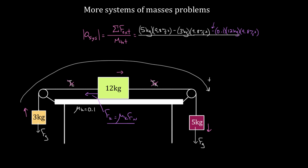Then I divide by the total mass: three plus 12 plus five equals 20 kilograms. Solving this gives an acceleration of the system of 0.392 meters per second squared. This is a very fast, essentially one-liner approach. There's much less chance for error than solving three equations with three unknowns.